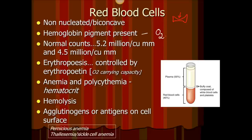Hemoglobin has two parts: a heme pigment, which contains iron, and globin, which is the protein. It's the iron that helps bind to oxygen. The normal red blood cell count is the largest of all blood cells — about 5.2 million per cubic millimeter in males and 4.5 million in females.